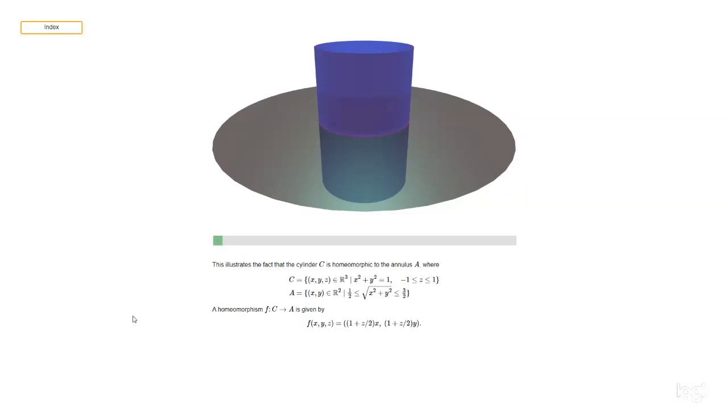This demonstration explains the fact that a cylinder is homeomorphic to an annulus. Here this picture is showing a cylinder C which is given by this formula here.